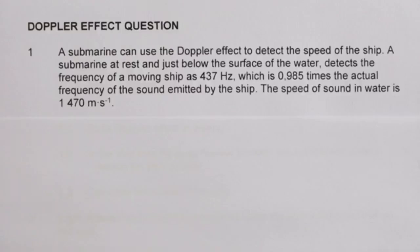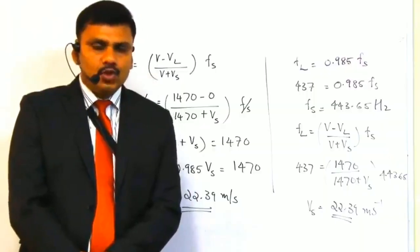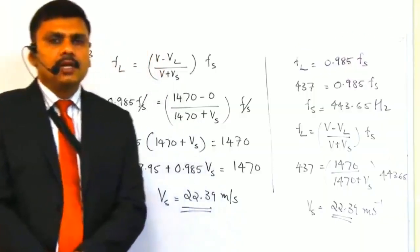A submarine can use the Doppler effect to detect the speed of a ship. A submarine at rest, just below the surface of the water, detects the frequency of a moving ship as 437 Hz, which is 0.985 times the actual frequency of the sound emitted by the ship. The speed of sound in water is 1470 meters per second. In this numerical problem, there are three questions.